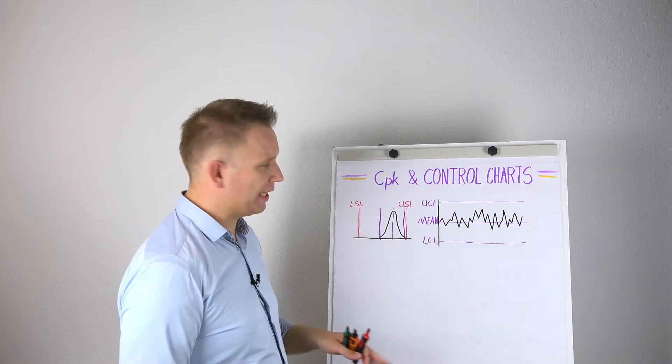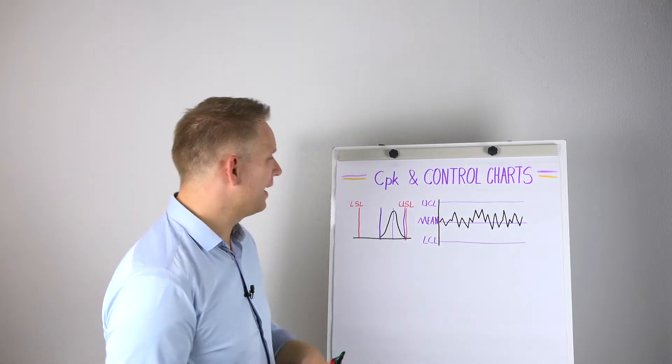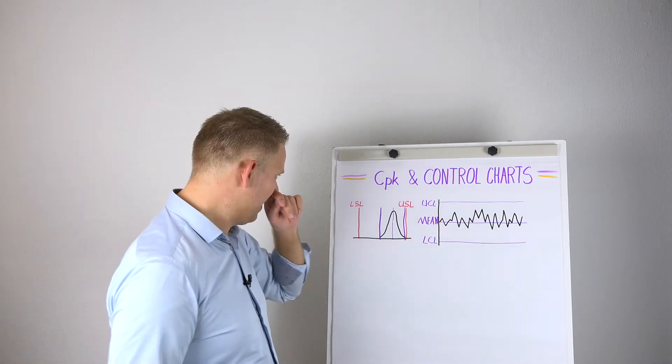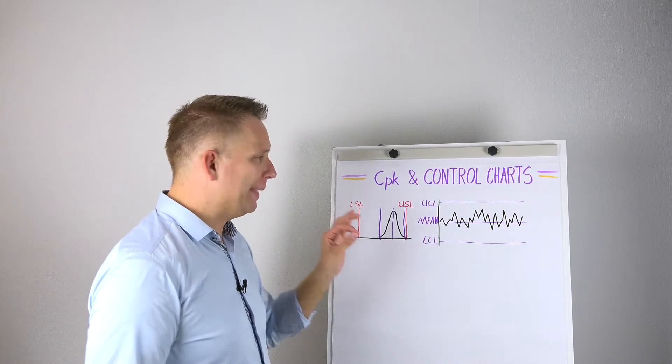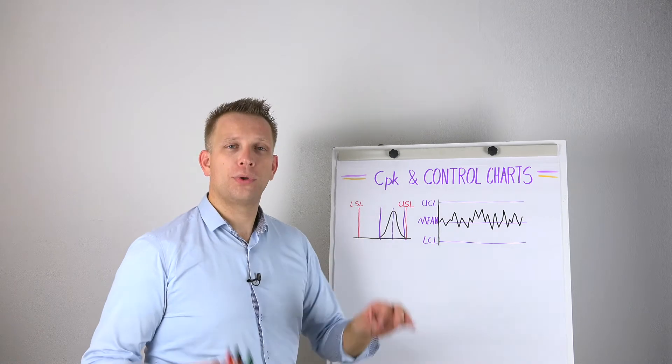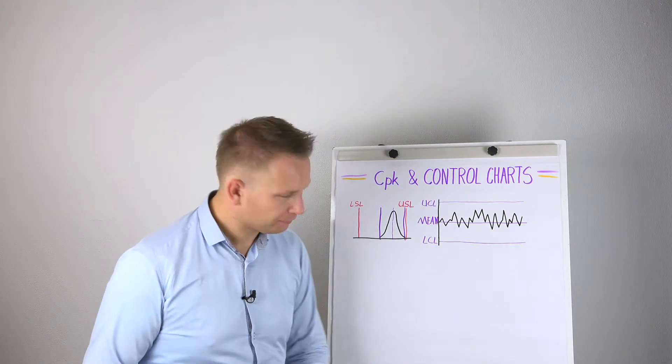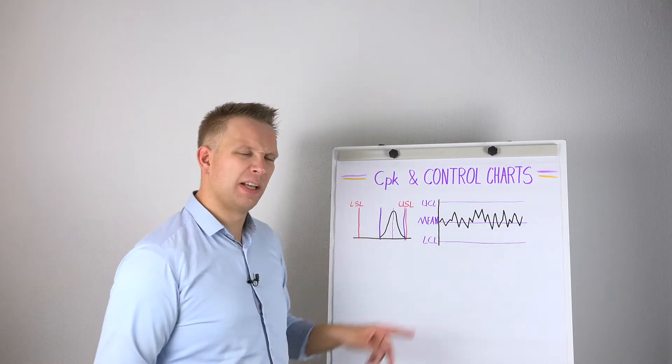With the mean of the process, the lower and the upper control limits, if this doesn't really move, but if you have a stable process, this is how it would look. Now, that means that your control chart will tell you that everything is fine, while your CPK is still not super.